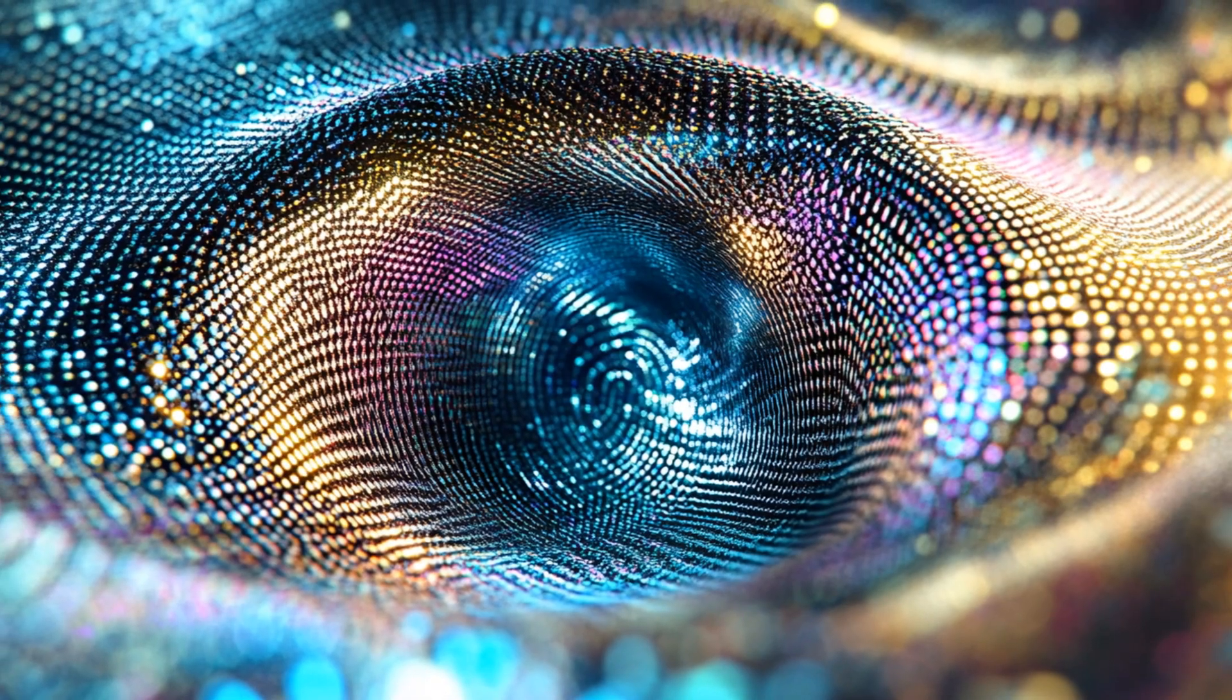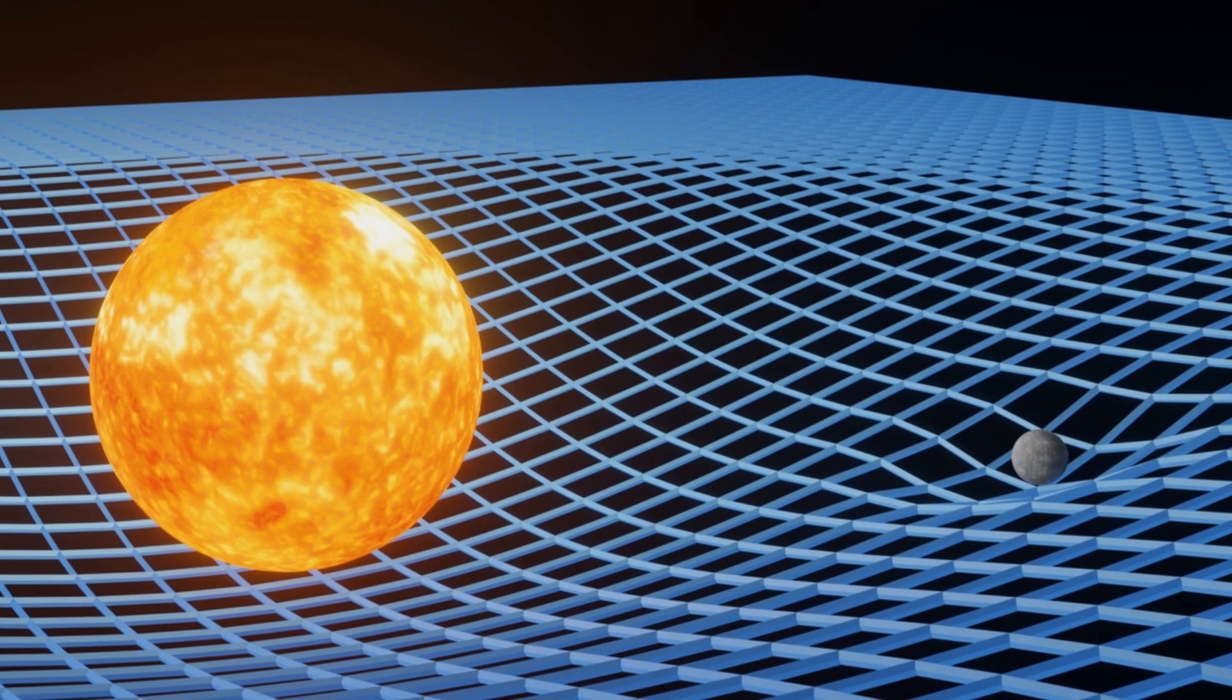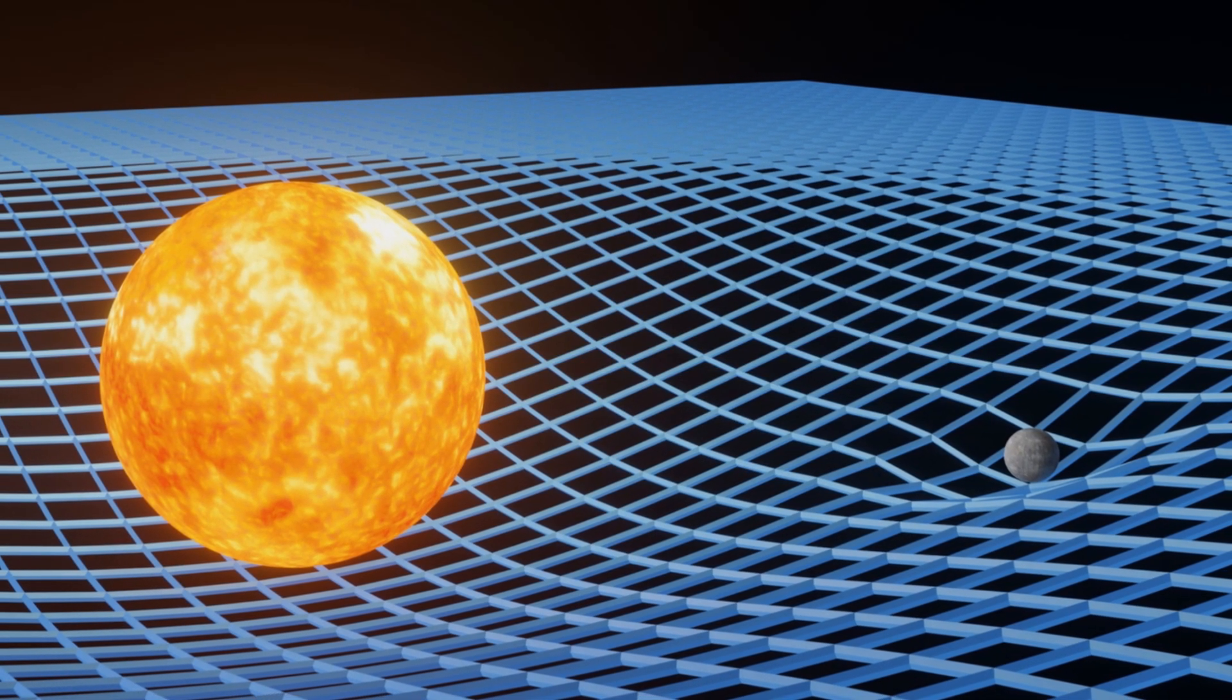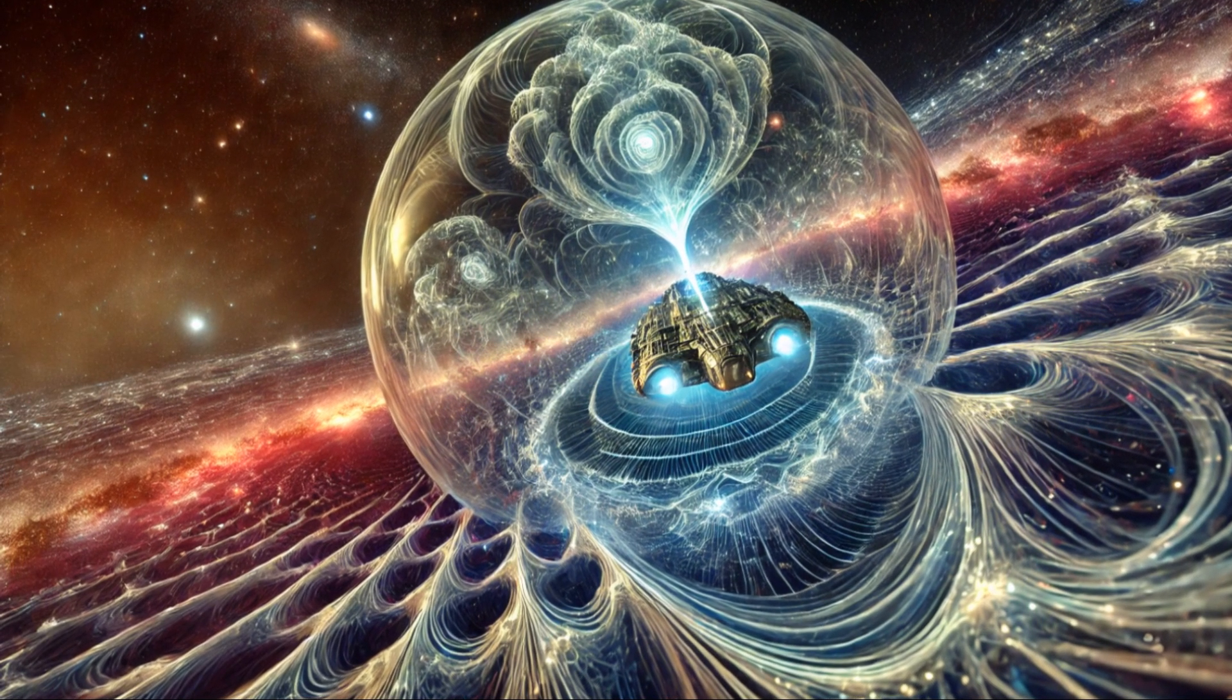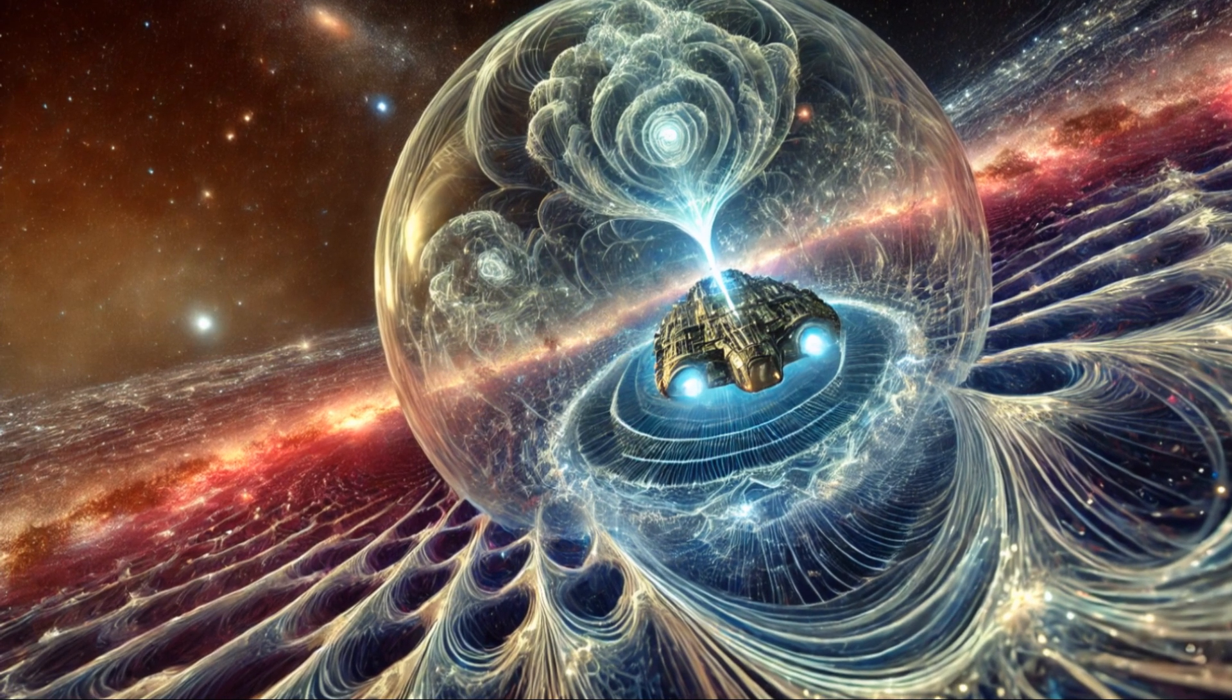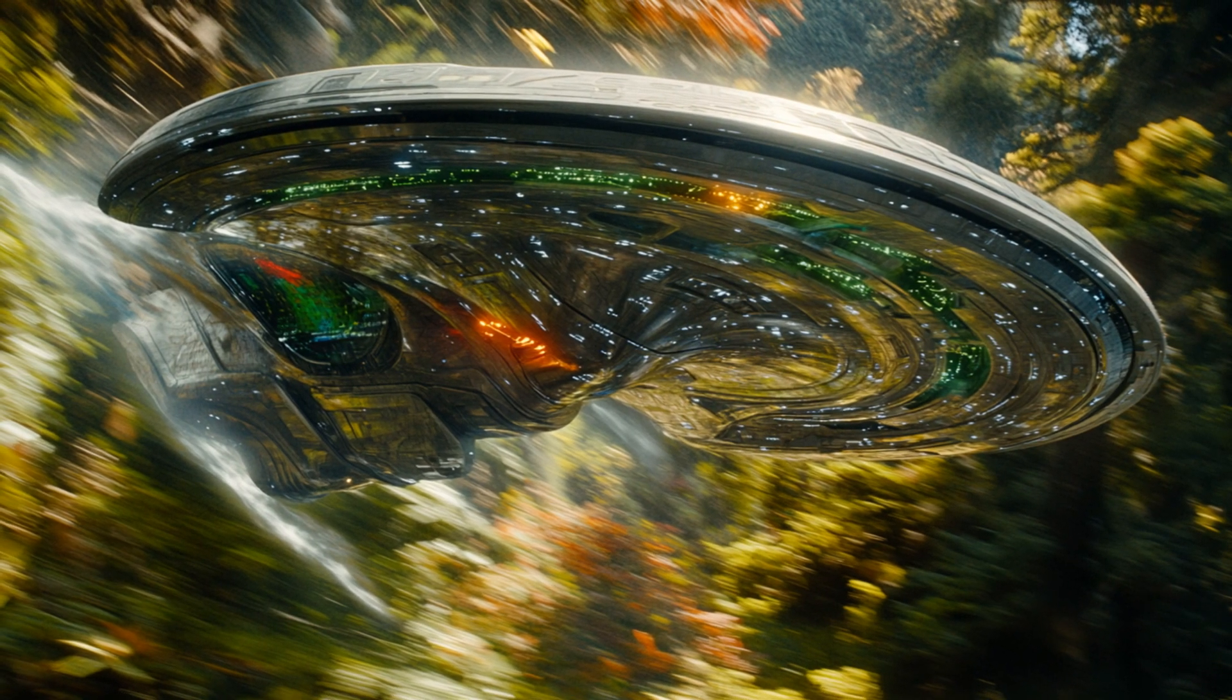Imagine space-time as a stretched rubber sheet. Placing a massive object like a star on this sheet creates a dent, representing gravity. MEQ allows us to manipulate the sheet directly, expanding space-time behind a spacecraft and contracting it in front. This creates a warp bubble that propels the spacecraft forward.